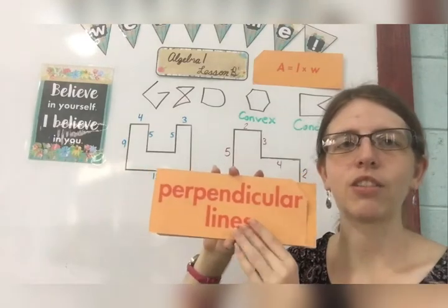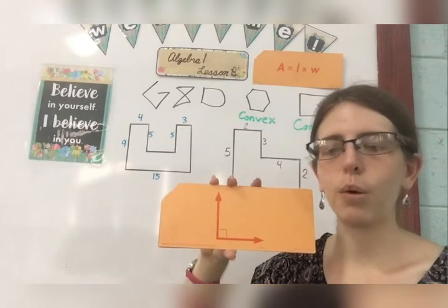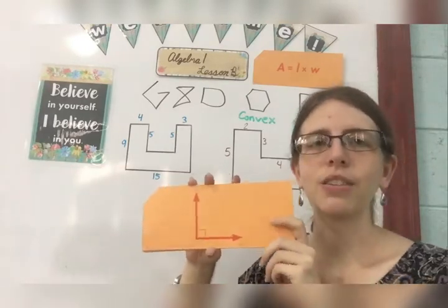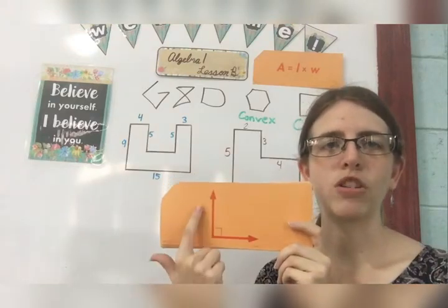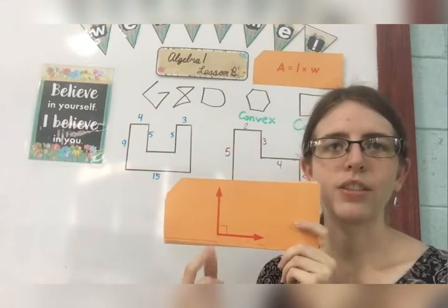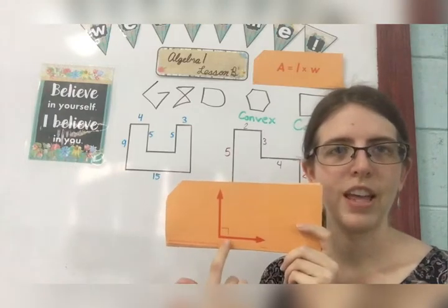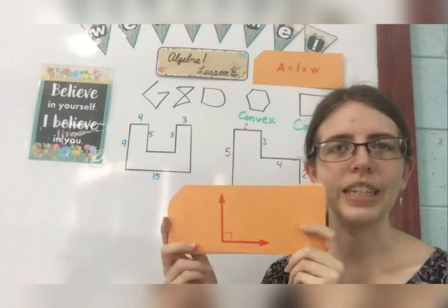Perpendicular lines are lines that intersect at right angles. Well, what's a right angle? I'm so glad you asked. A right angle is an angle whose measure is 90 degrees. And so the legs of that angle are straight up and straight over from each other. So the measure of this angle is 90 degrees.